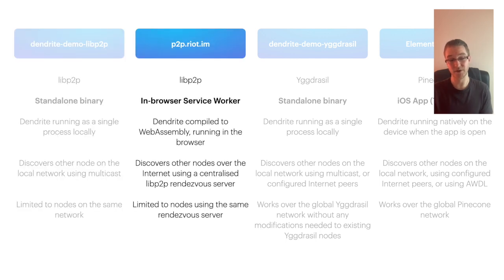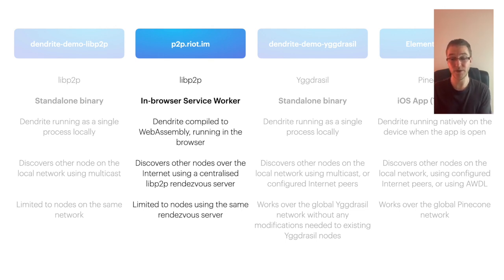The second demo was a bit of an evolution of the first, but instead of building a standalone binary, we asked ourselves what it would look like if Dendrite was running right there in the web browser — and we achieved this by compiling Dendrite as WebAssembly. We used libP2P again for this demo, but running in the web browser has a number of limitations, including not being able to access the usual host networking, so there's no multicast peer discovery. To work around this, we built a libP2P rendezvous server to allow users to discover each other over the internet, which effectively acts as a traffic relay.